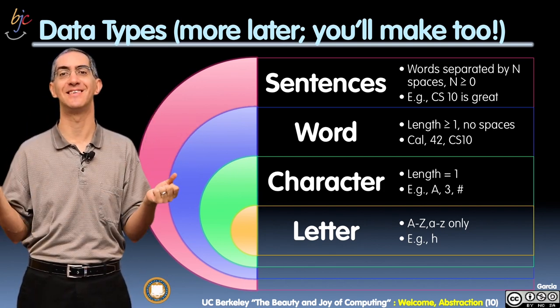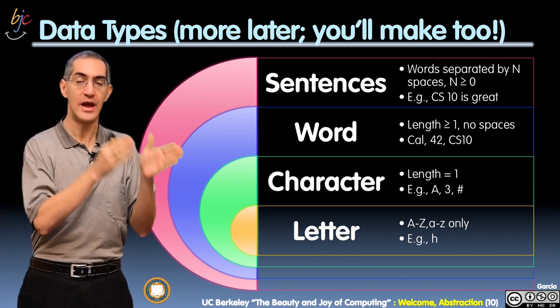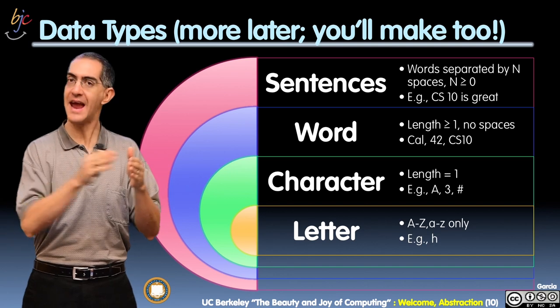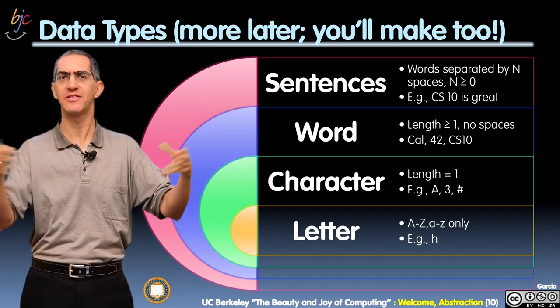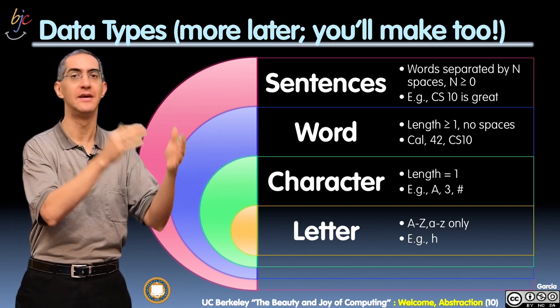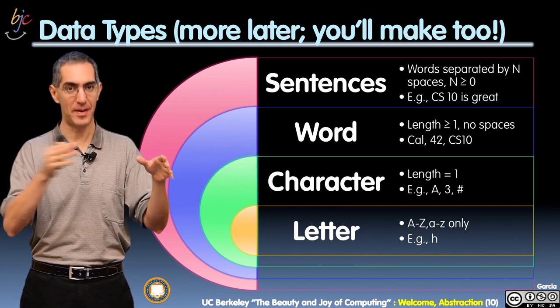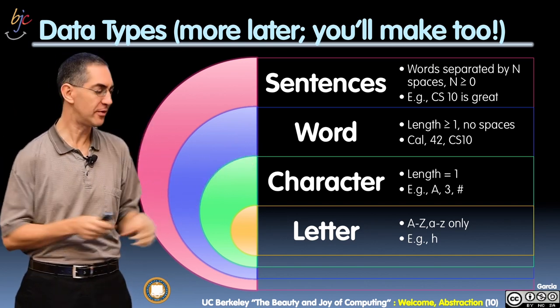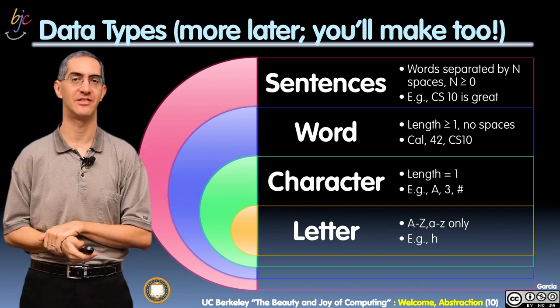At the top level, you have a sentence. A sentence says it's words with spaces around them. So it's any length, but it's kind of a normal sentence, not quotes around it. This is a great class, with spaces around it. That's called a sentence. So those are just four of the sample data types we're going to see in this class.